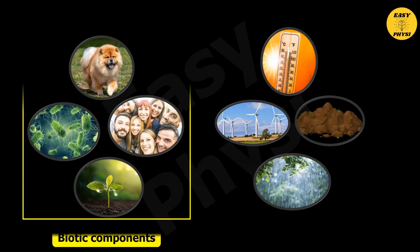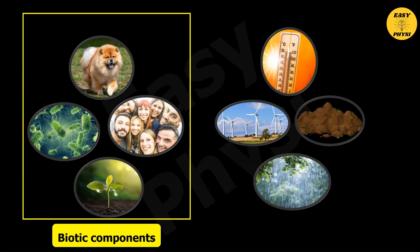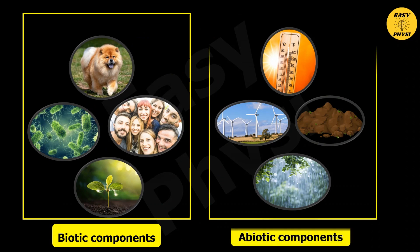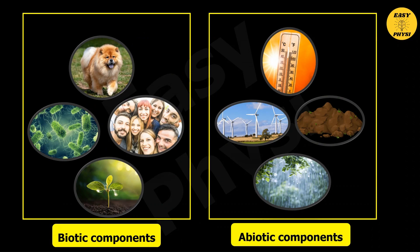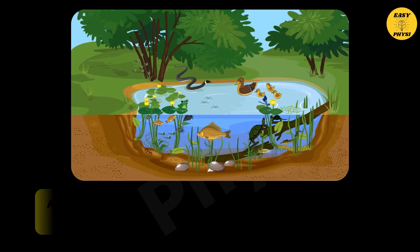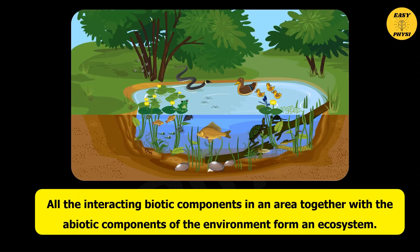The living components of the environment are called biotic components, while the non-living components are called abiotic components. All the interacting biotic components in an area together with the abiotic components of the environment form an ecosystem.